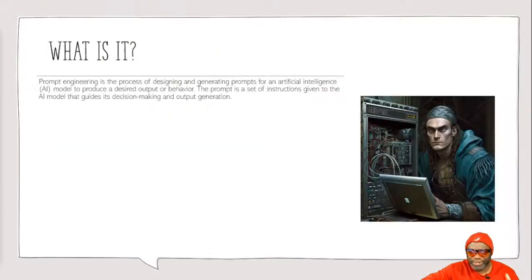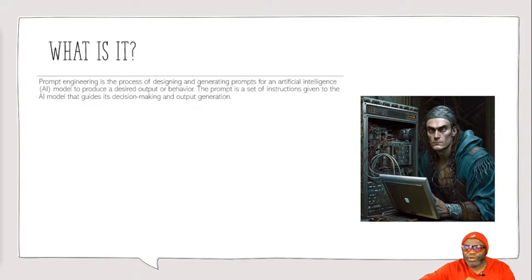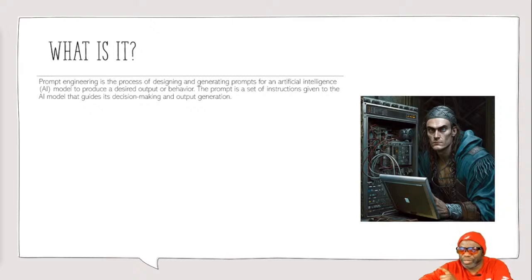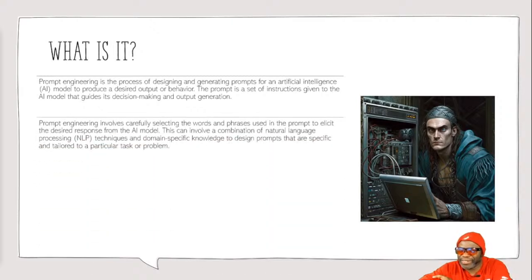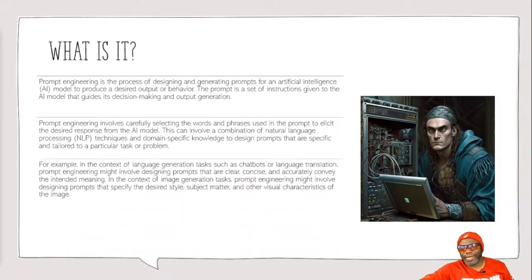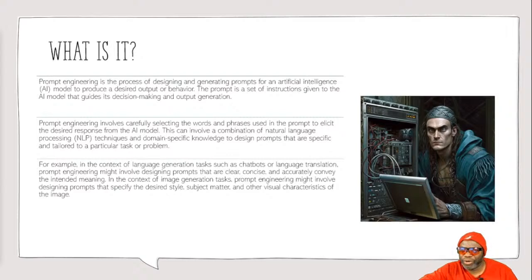Prompt engineering is the process of designing and generating prompts. You've got to be a great designer using things like the RGB and other intuitive methods for AI to produce a desired output or behavior. The prompt is a set of instructions given to the AI model that guides its decision making. It involves carefully selecting the words and phrases used in the prompt to elicit the desired response. If you cannot get the desired response, you're not a good AI engineer. In the context of language generation tasks such as chatbots or language translation, prompt engineering involves designing prompts that are clear, concise, and accurately convey the intended meaning.